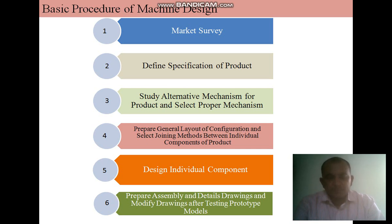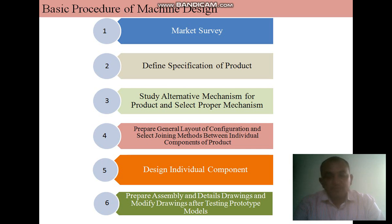The next step is to design the individual components. The design of individual components or machine elements is an important step in the design process. It consists of various stages: first, determine the forces acting on the component; second, select the proper material based on functional requirements such as strength, rigidity, hardness, and wear resistance; third, determine the modes of failure and select the appropriate failure criterion such as yielding strength, ultimate tensile strength, endurance limit, or permissible stresses; and finally, determine the geometrical dimensions using a suitable factor of safety, then modify dimensions based on assembly and manufacturing considerations.